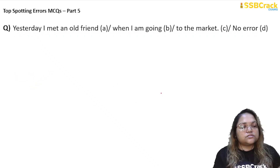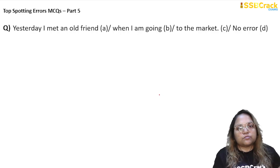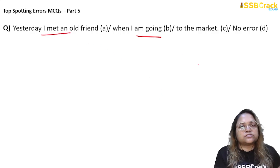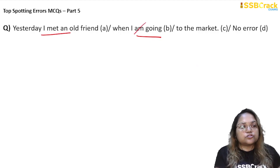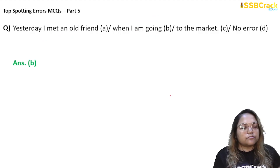Next question: 'Yesterday I met an old friend when I am going to the market.' Here you can see two different tenses are used. Both events happened yesterday, but one is in simple past and the other is in present continuous, which is wrong. It should also be in past continuous tense: 'when I was going to the market.' So the error was in part B, and the answer is option B.